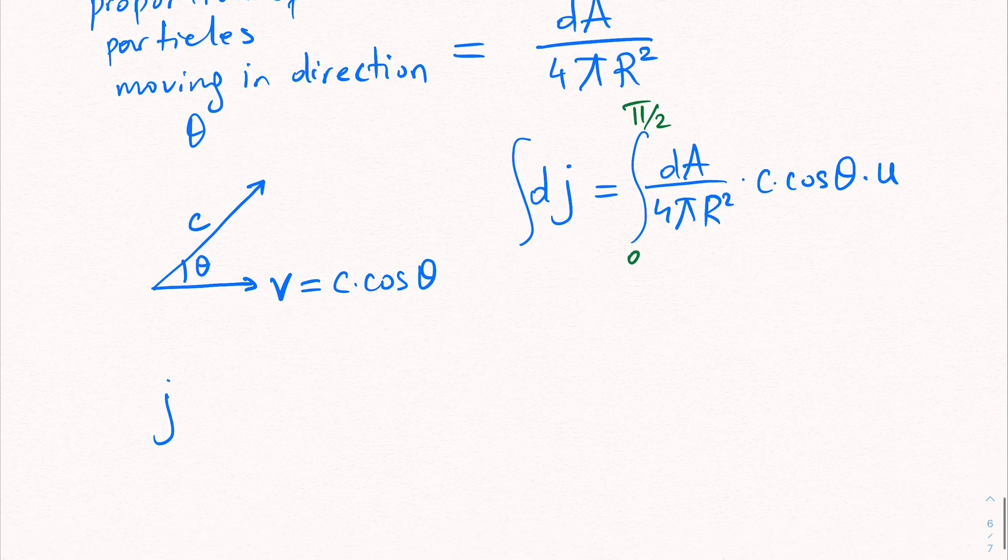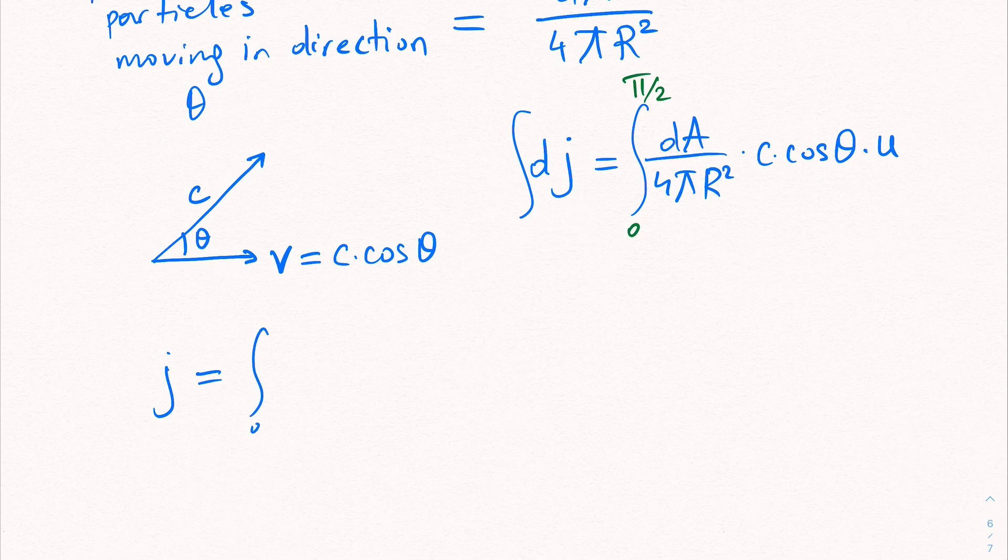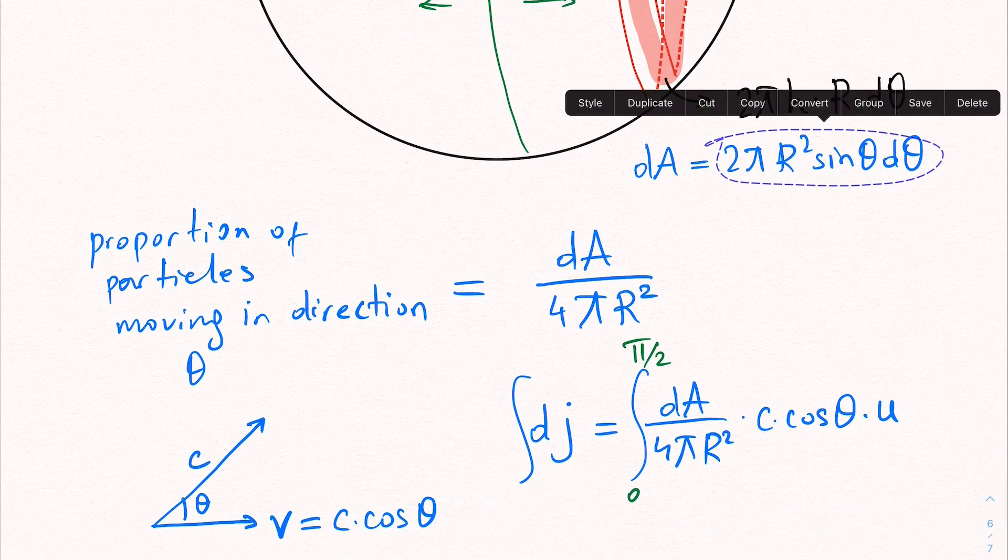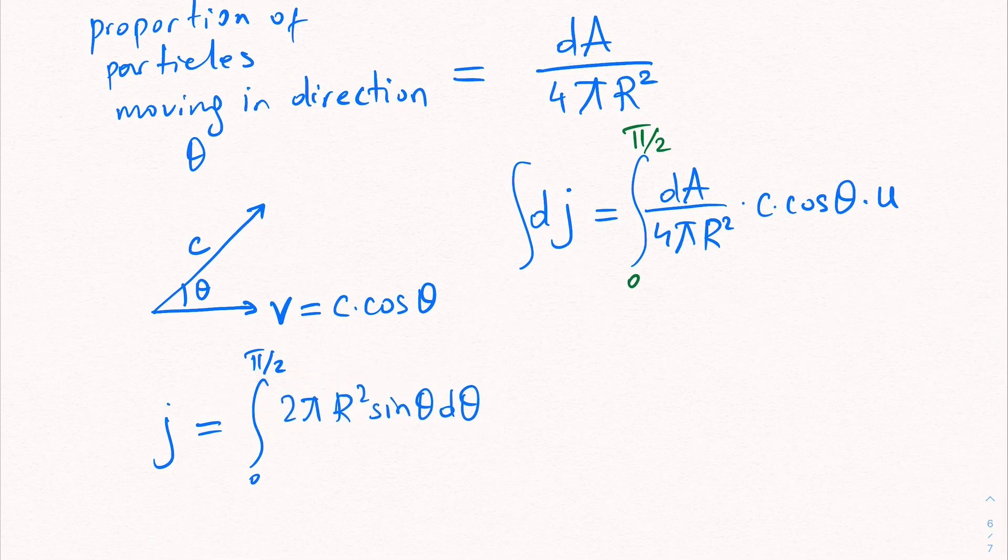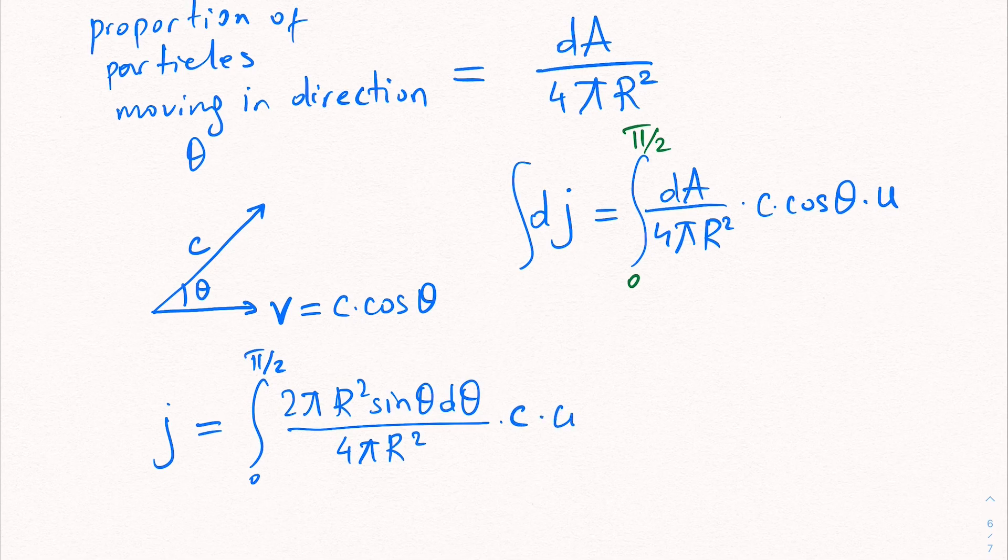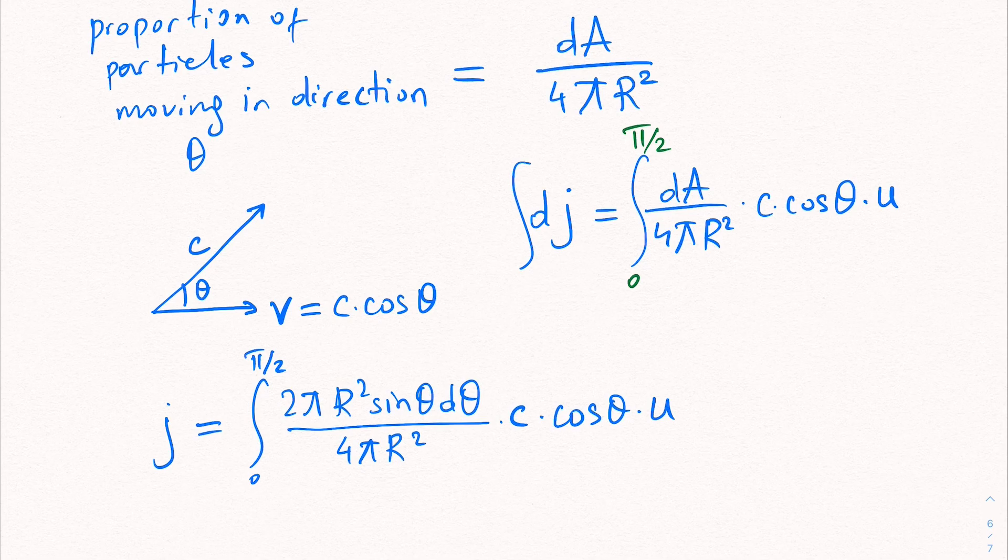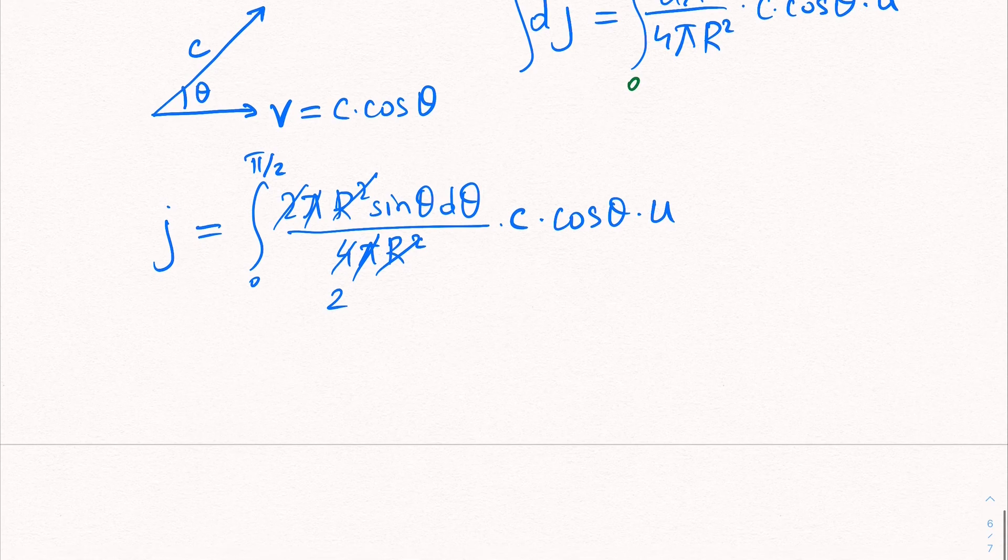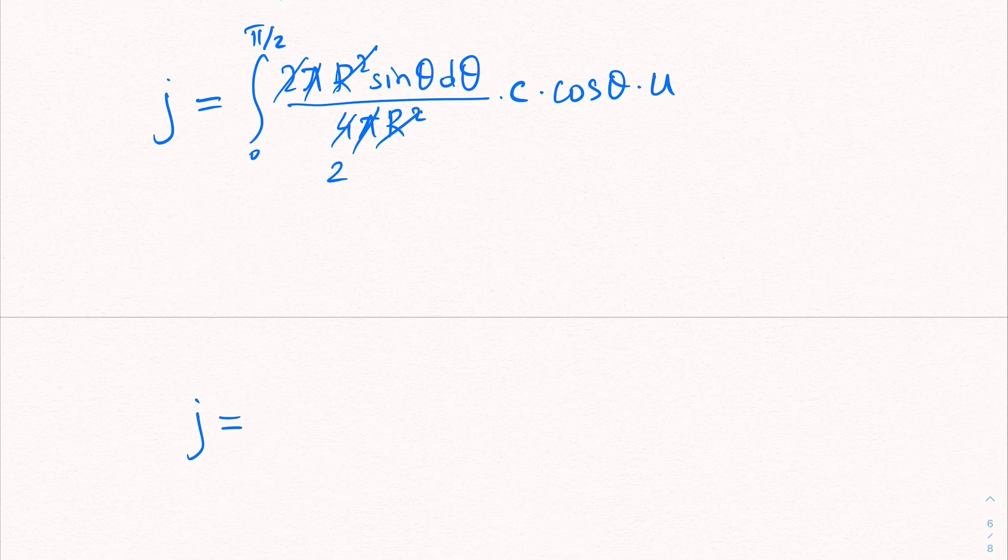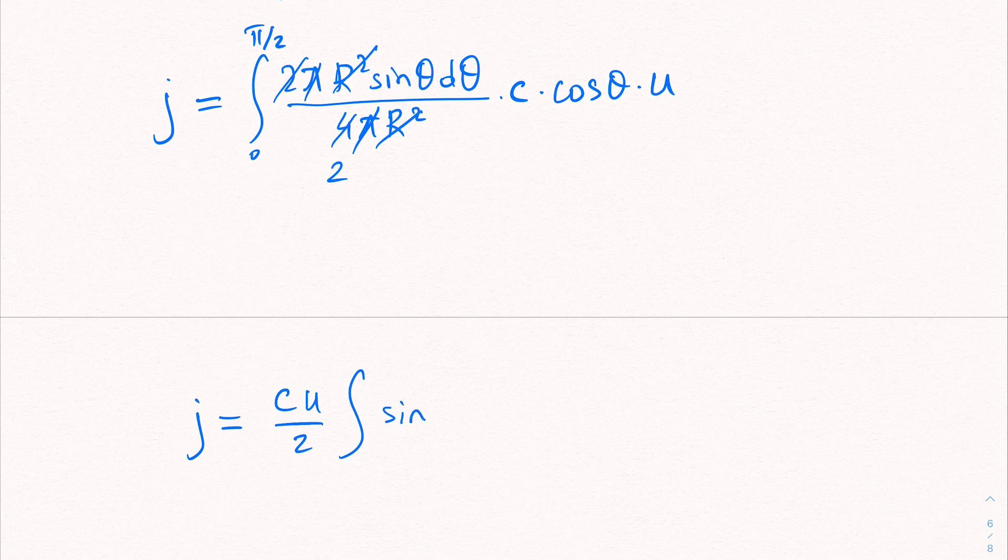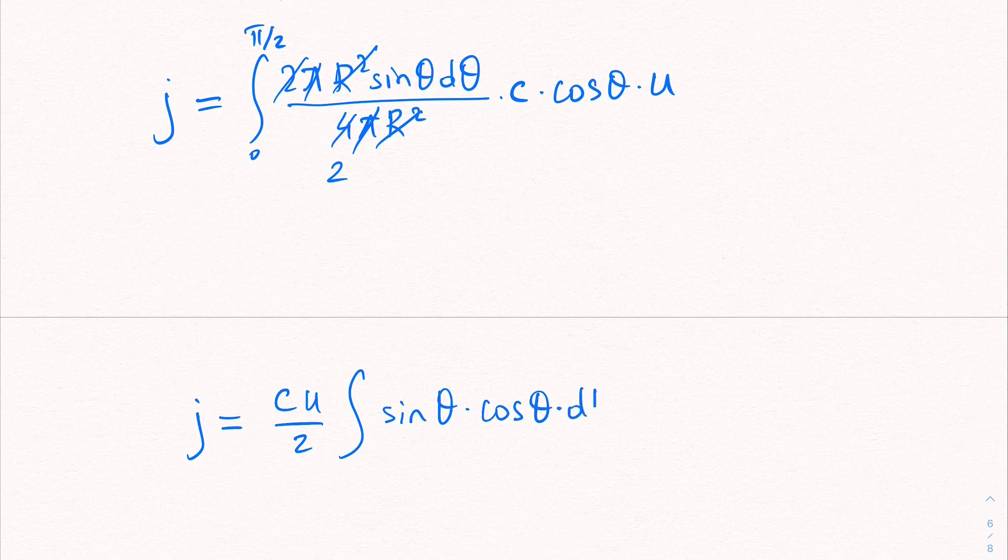Let's take this integral. Let's write down j. j is equal to integral 0 pi over 2. Let's remember what dA was. Actually, we can take it from here and paste it over here. This is my dA. And I can divide by 4 pi r squared times c times cosine theta times u. Let's see. Pi takes pi. 2 takes 4. And there's 2 left. r squared r squared. We are almost there. j is equal to integral. So let me write c u over 2 outside. And within, I just have this integral sine theta times cosine theta times d theta.